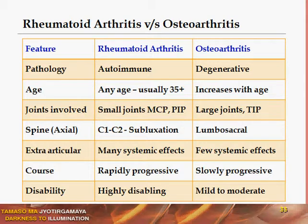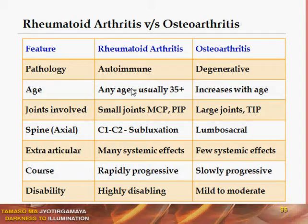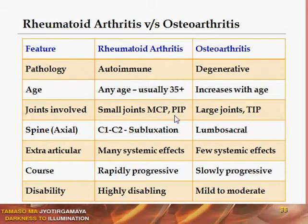The most important condition to differentiate from rheumatoid arthritis is osteoarthritis. In rheumatoid arthritis the pathology is autoimmune, whereas in osteoarthritis it is degenerative. RA typically occurs at age 35 and above, though juvenile rheumatoid arthritis can also occur. Osteoarthritis increases with increasing age. Joints involved in RA are the small joints of the hands and feet — MCP and PIP joints — whereas in osteoarthritis large joints and sometimes DIP joints are affected.